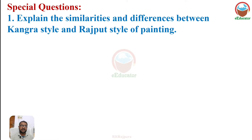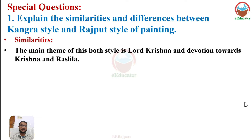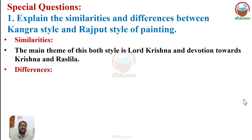Some special questions are given in the exercise at the end of the yellow book. One special question: explain the similarities and differences between the Kangra style and Rajput style of painting. Similarities: the main theme of both styles is Lord Krishna, devotion to Krishna, and Raslilas. Both Rajput and Kangra paintings revolve around Krishna Bhakti.